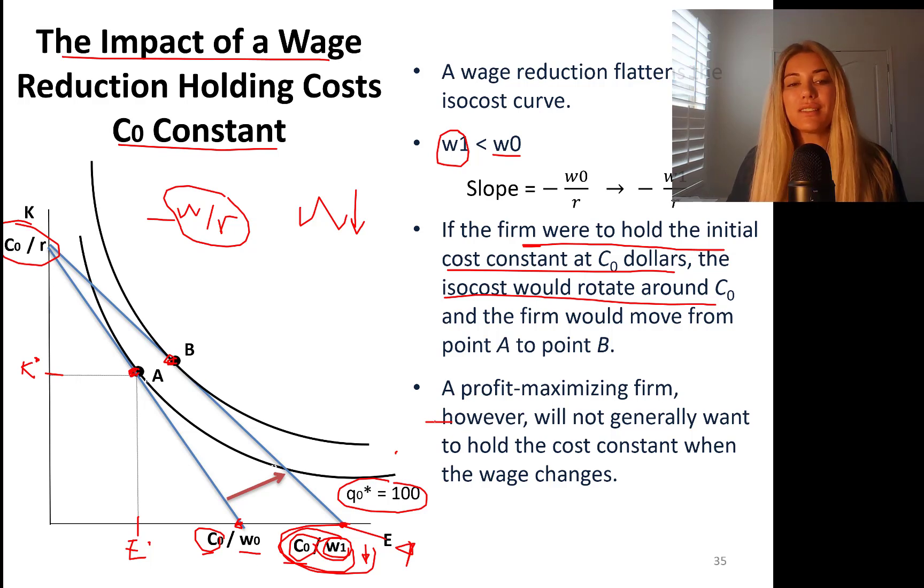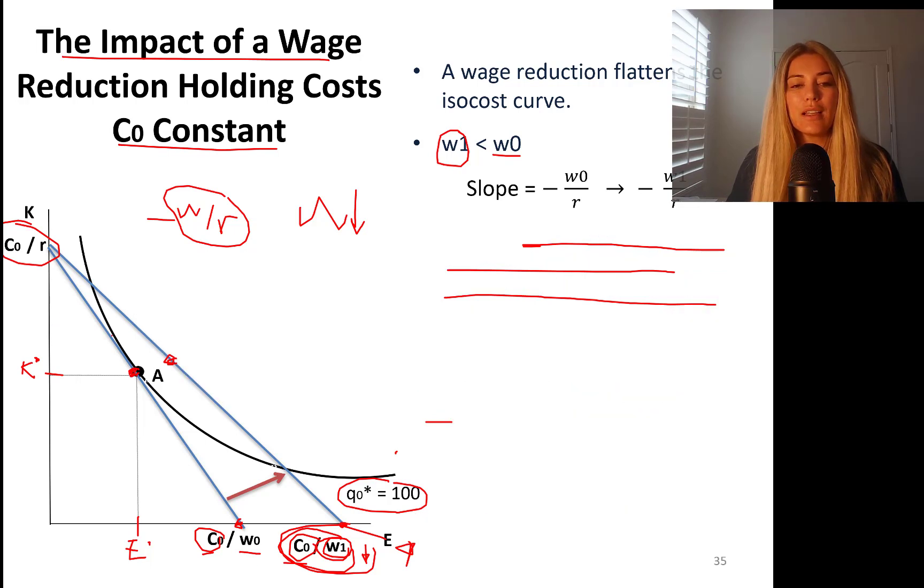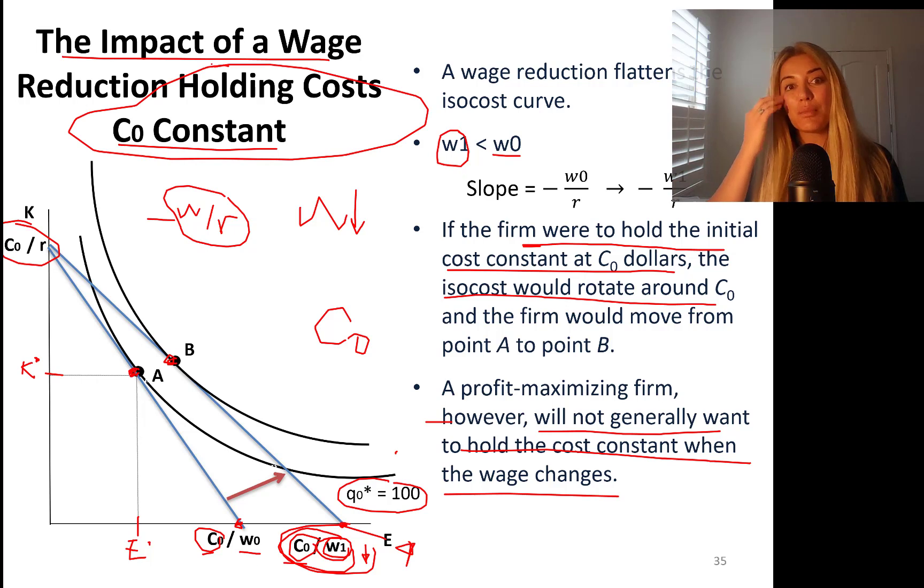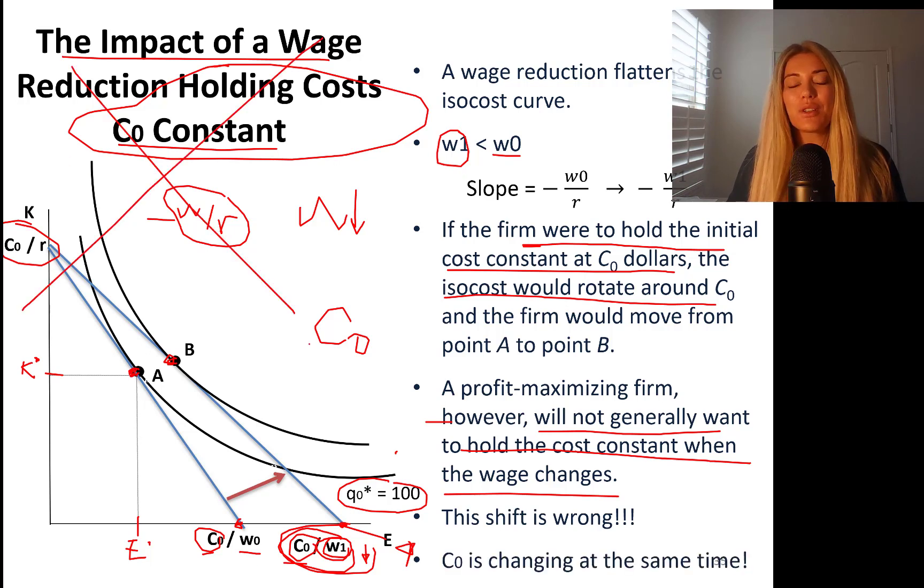If the firm were to hold the initial cost constant, C0 dollars, the isocost would rotate around C0 and the firm would move from A to B. However, this is a wrong move. I showed you the wrong move. This is completely wrong. A profit maximizing firm will not do this because you will not hold the cost constant when the wage changes. You don't need to stick to C0. Holding cost constant doesn't really happen. If the wages are cheaper, you want to be able to adjust your total cost of production. This shift is wrong. C0, total cost is changing at the same time as well.